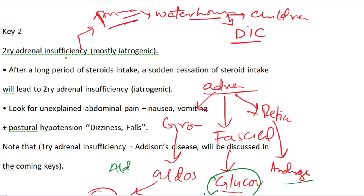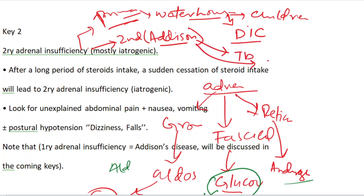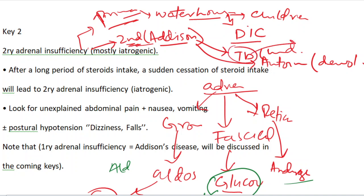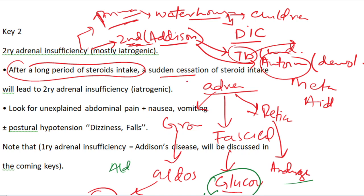The next type is Addison's disease, which is primary adrenal insufficiency. It can be caused by tuberculosis in the developing world, or autoimmune mechanisms in developed countries. Other causes include TB invading the adrenal space, autoimmune destruction, metastatic cancers, and long-term steroid intake followed by abrupt cessation.